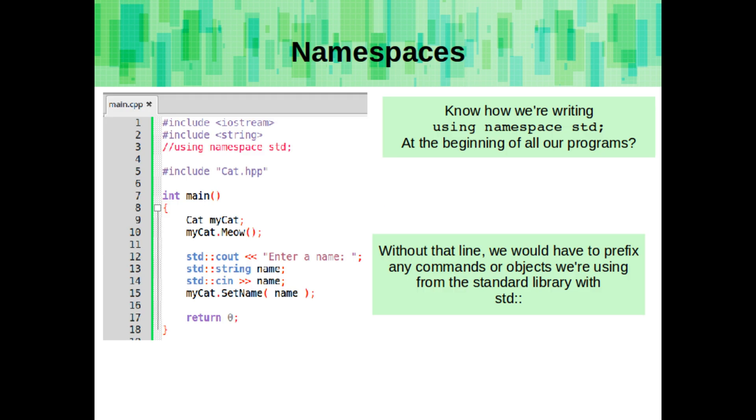Remember how we keep writing using namespace std at the beginning of all of our programs? Without that line, we would have to prefix any commands or objects we're using from the standard library with std and then the scope resolution operator, or two colons.